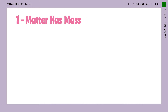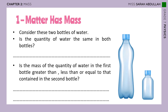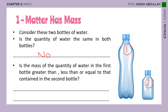All objects are made of matter, as we already said in the previous chapter, but some contain more matter than others. Consider these two bottles of water, the big one and the small one. Is the quantity of water the same in both bottles? No, it is not. To compare the masses of two objects is, in fact, to evaluate the quantity of matter they contain. The first bottle contains more water, so it contains more matter — it has the greater mass.